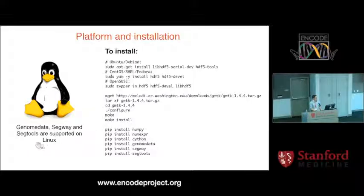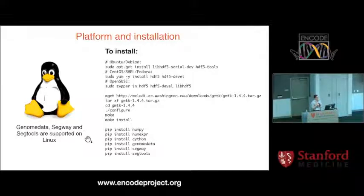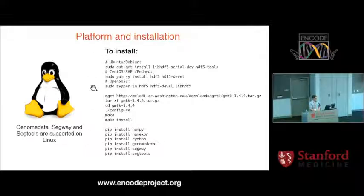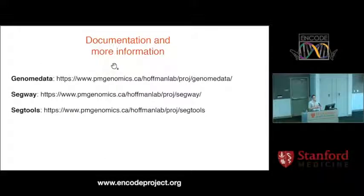These tools were developed on Linux. They probably also work on macOS since the platforms are similar, but we haven't done much testing. So we'll assume a Linux machine is available — if you don't have one, you can get one from Amazon EC2, for example. To install all these tools, just run the provided commands on your command line. They're all in Linux package manager packages. Documentation is available at the links for Genome Data, Segway, and SegTools — these slides should be available so you won't need to write down the links.